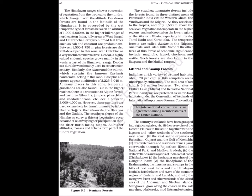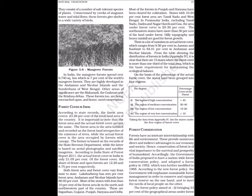Mangroves grow along the coasts in the salt marshes, tidal creeks, mudflats and estuaries. They consist of a number of salt-tolerant species of plants. Criss-crossed by creeks of stagnant water and tidal flows, these forests give shelter to a wide variety of birds. In India, the mangrove forests spread over 6740 square kilometers, which is 7% of the world's mangrove forests. They are highly developed in the Andaman and Nicobar Islands and the Sundarbans of West Bengal. Other areas of significance are the Mahanadi, the Godavari and the Krishna deltas. These forests are being encroached upon and hence need conservation.